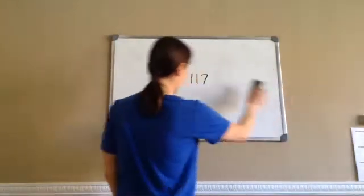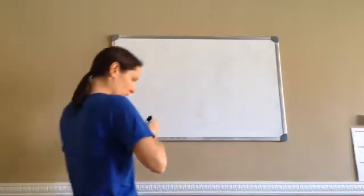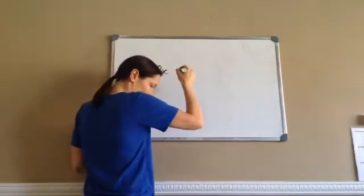Alright, 7th grade, lesson 117. This is on slope-intercept form of linear equations. Now, I want to show you something, because you've been kind of learning about this over the last several lessons.